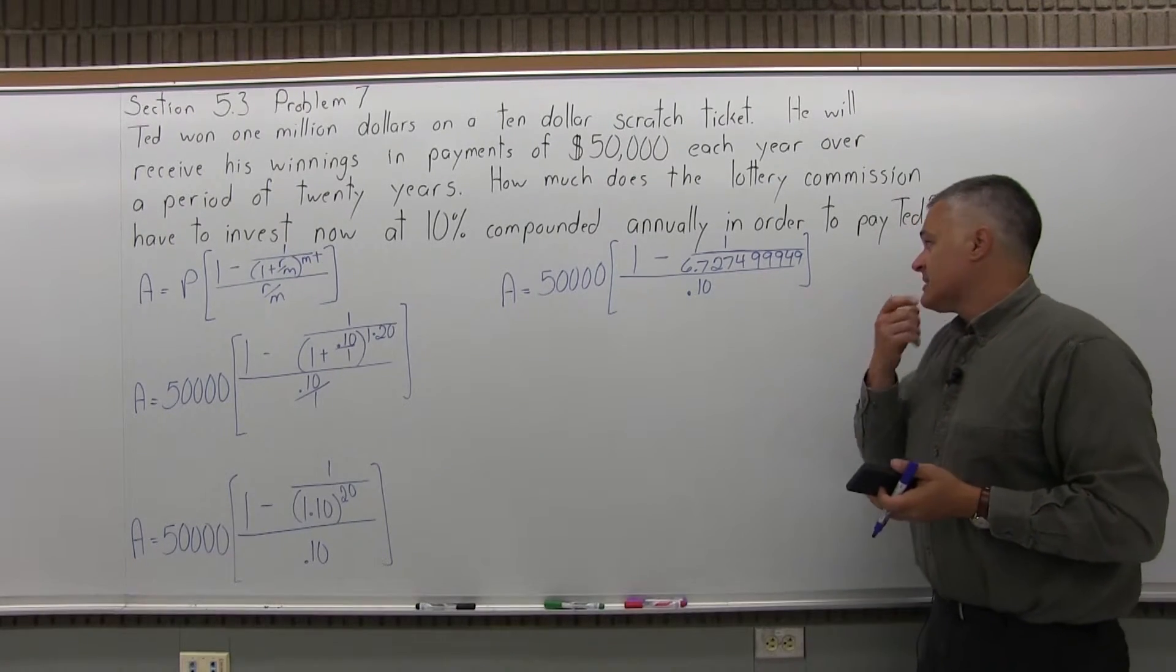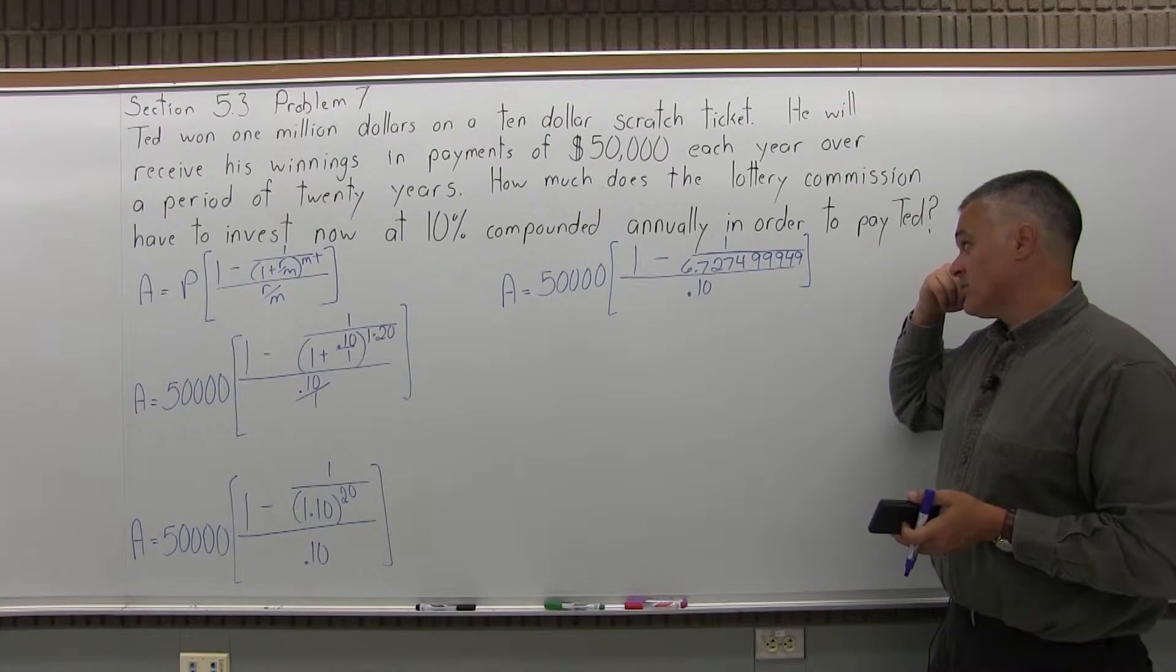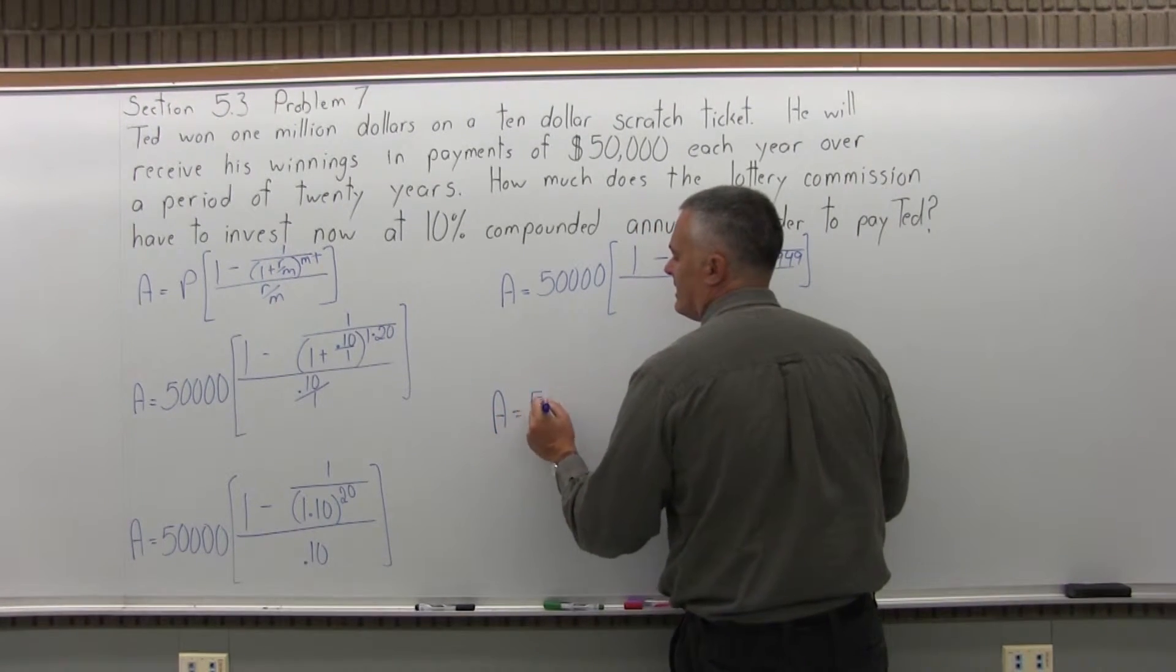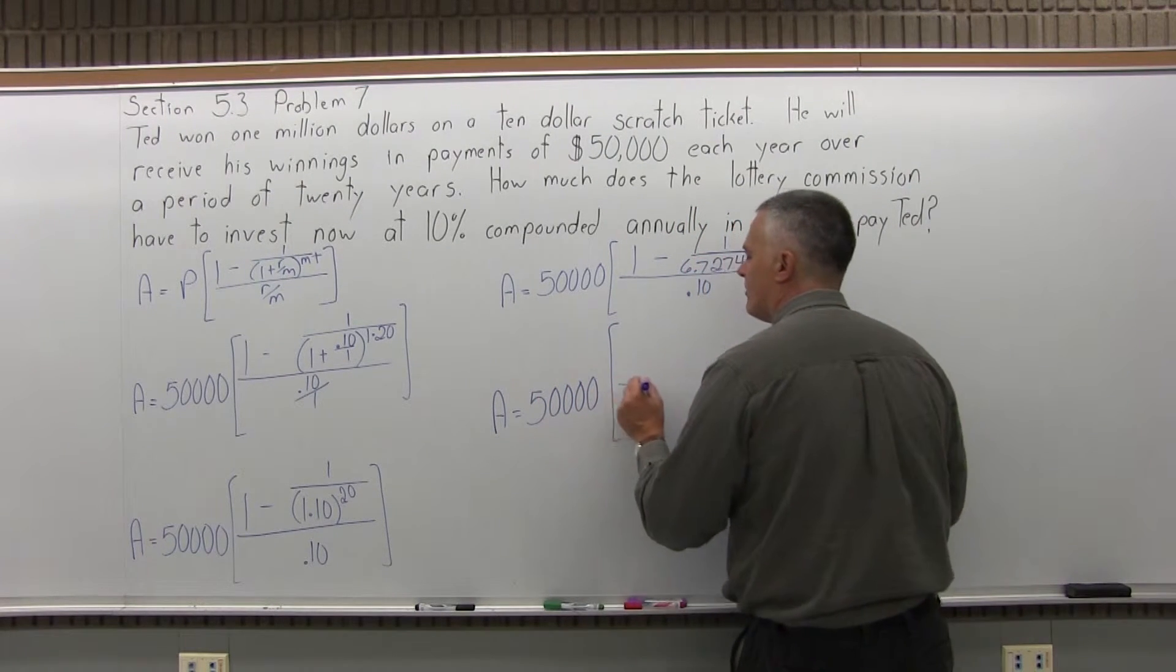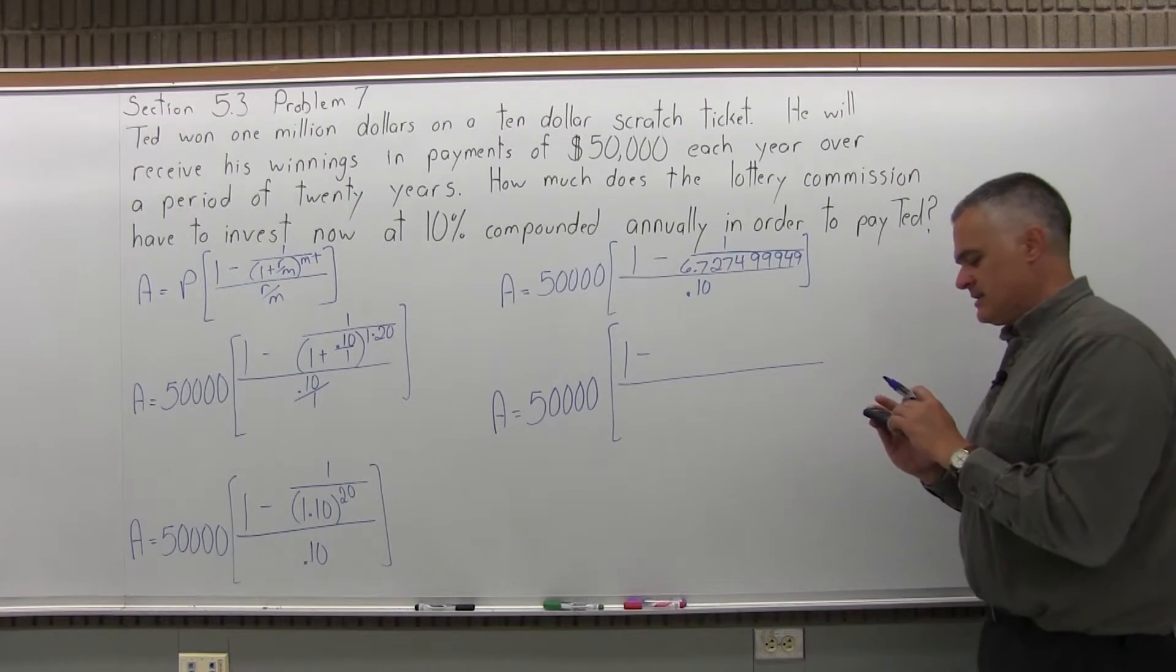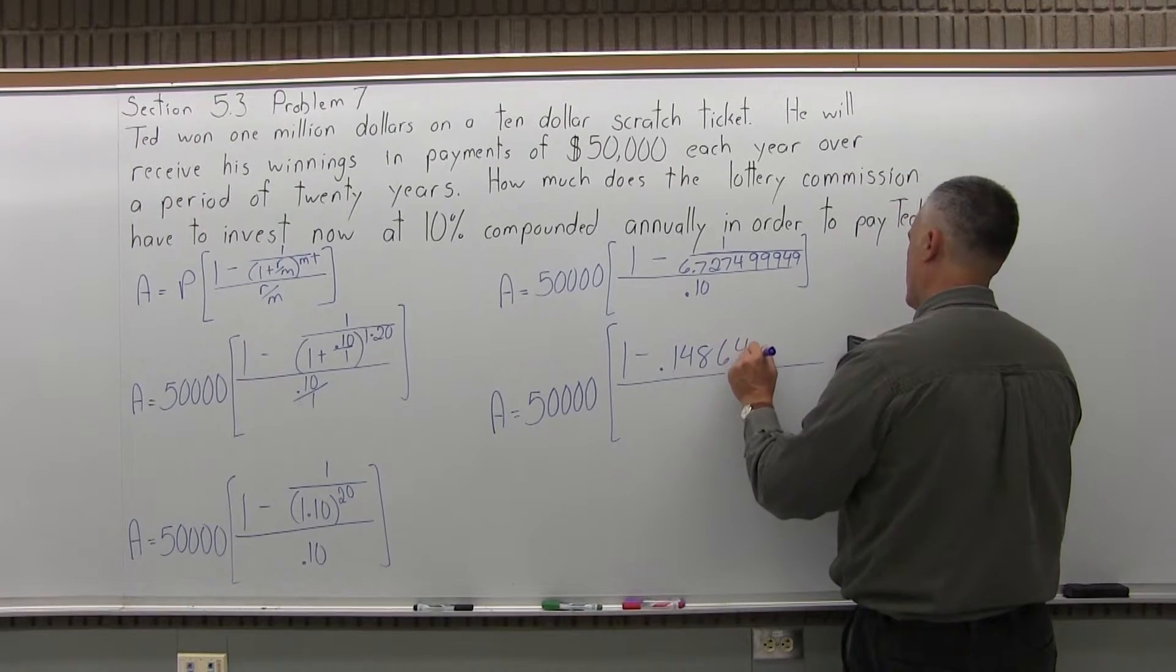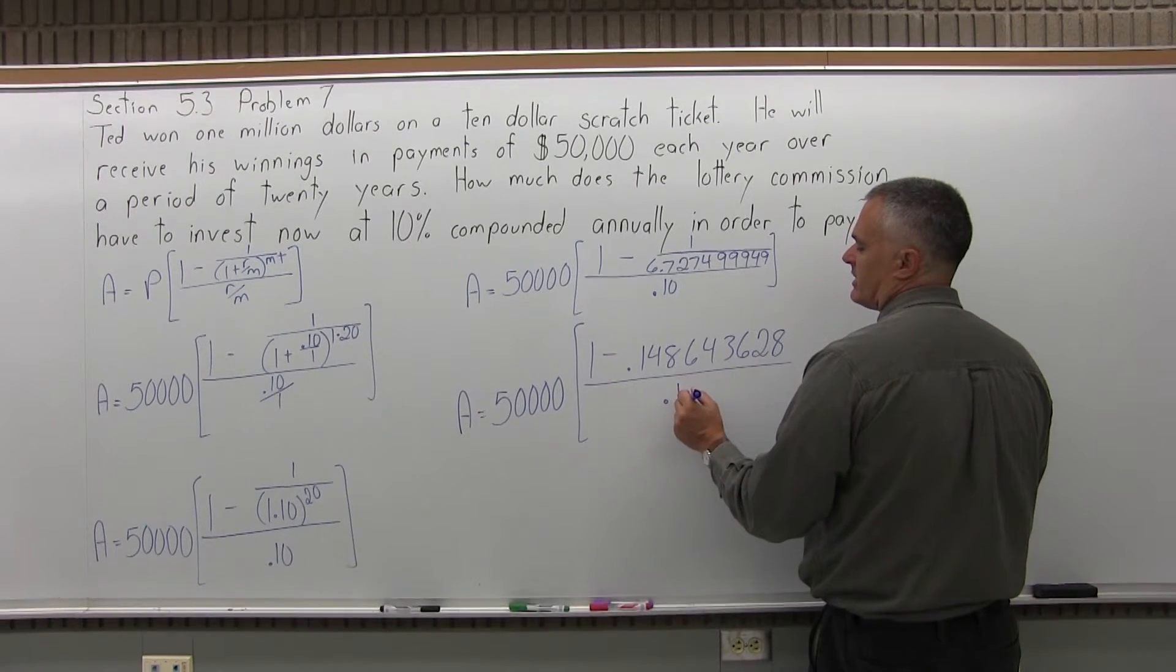So, in the numerator of the brackets, I have 1 minus the fraction. I want to simplify the fraction. The fraction is 1 over 6.727499949. So, let me do that division. When I do, I'm going to have A equals 50,000 times the brackets. In the brackets, I'll have 1 minus .148643628. And in the denominator of the brackets, .10.